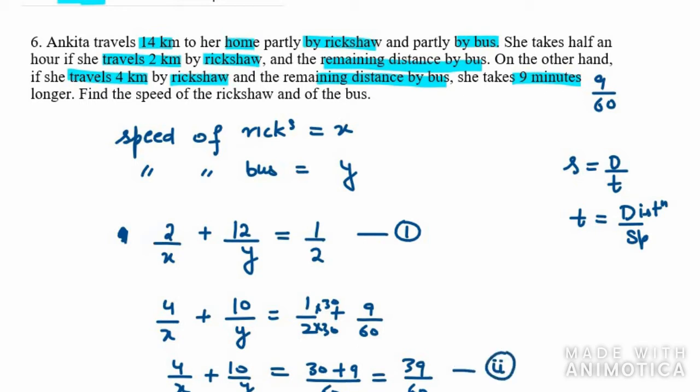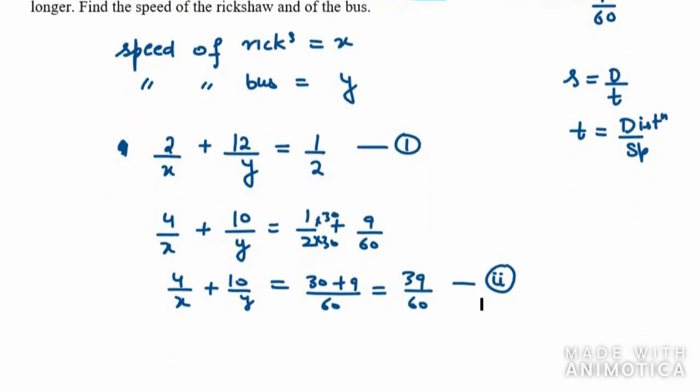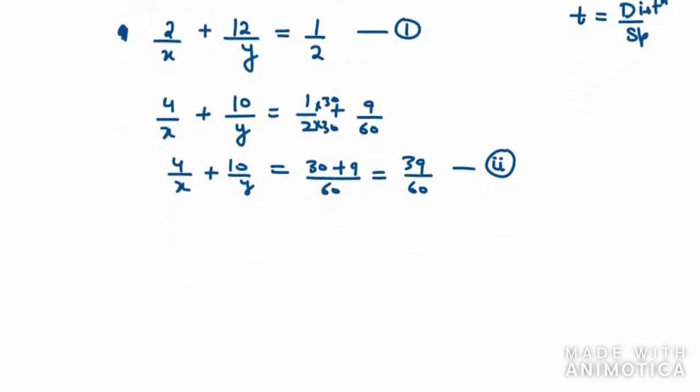So now we have two equations and we need to find the value of x and y respectively. We can use the reducible form. In reducible form, we need to let 1 over x as a and 1 over y as b. So my equation 1 becomes 2a, because we have 1 over x here, so 1 over x can be replaced by a. In the second part, it will be 1 over y, so plus 12b equals half. This is my equation number 3.